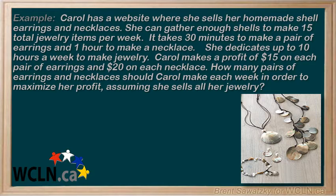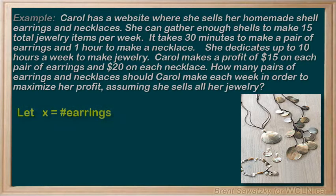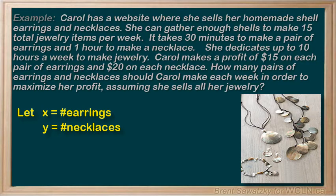That's a very wordy problem, right? So let's not get anxious about all those words — we'll just break it down into little parts, a system made up of little pieces. To start, let's determine what our main variables are going to be. We see that we're supposed to determine how many earrings and how many necklaces Carol should be making, and everything is related to how many of each item is made. So let x equal the number of earrings made, and y equals the number of necklaces made. It's good to document this clearly.